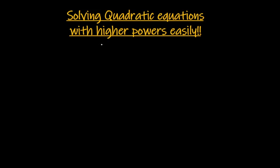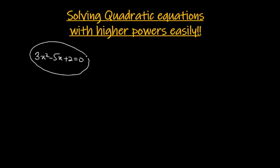Hello and welcome to my science tutorials. In today's video we want to learn how to factorize quadratic equations with higher powers very easily. It is very easy to simplify quadratic equations raised to the power 2 — for instance, a typical example like 3x² - 5x + 2 = 0 — but what if we have x to the power 4, power 5, or power 6?